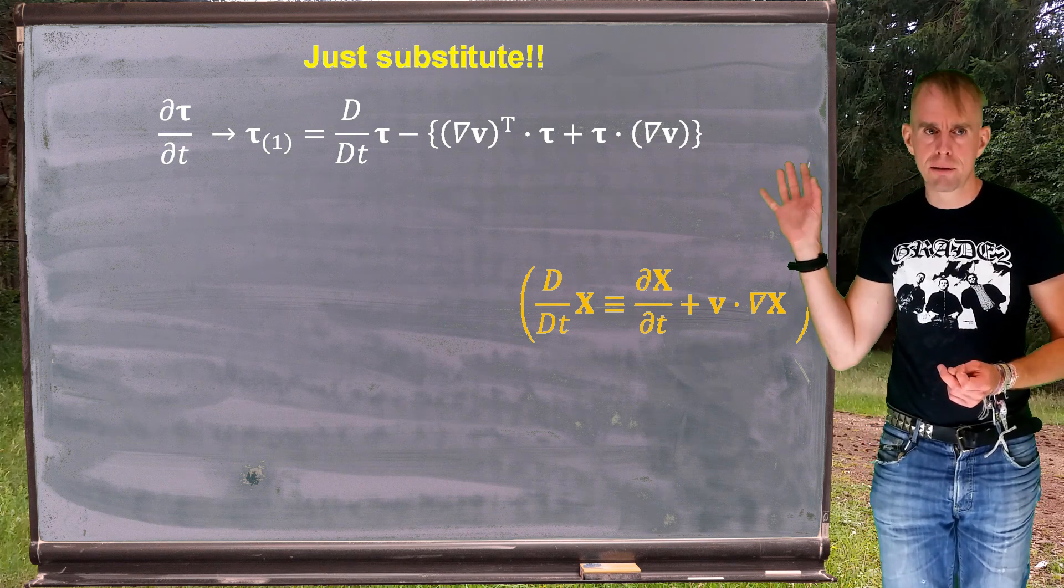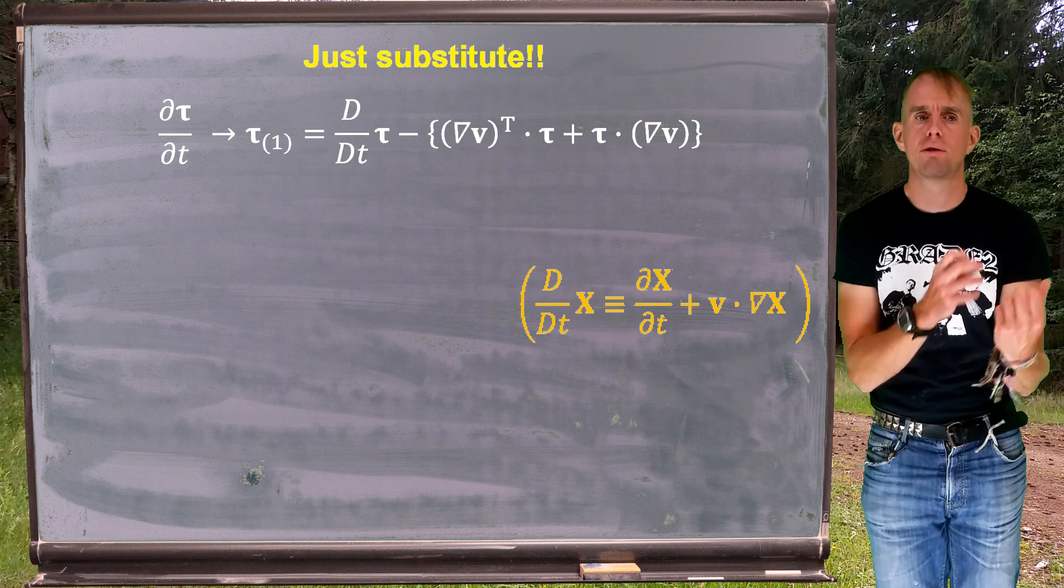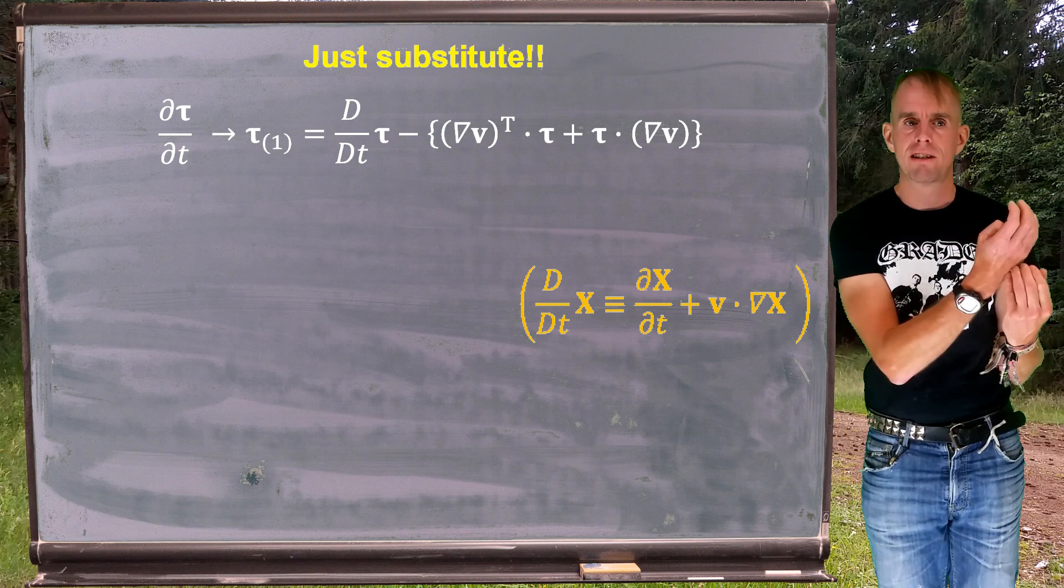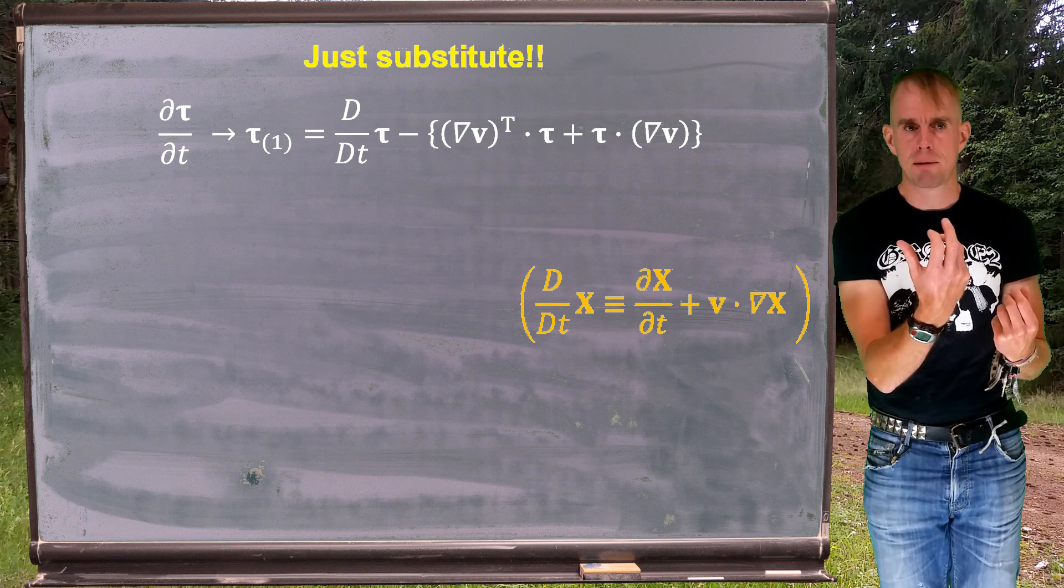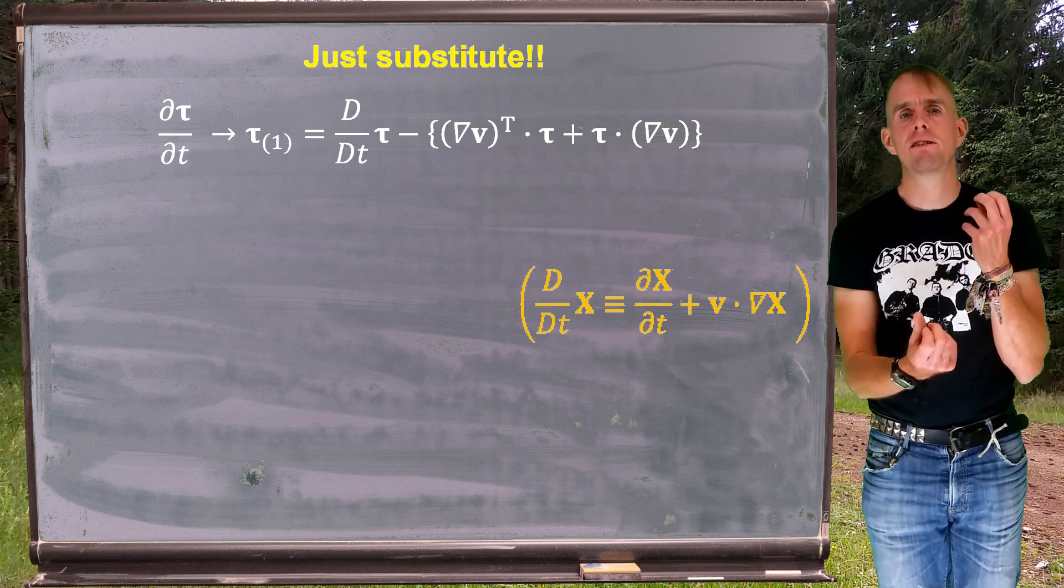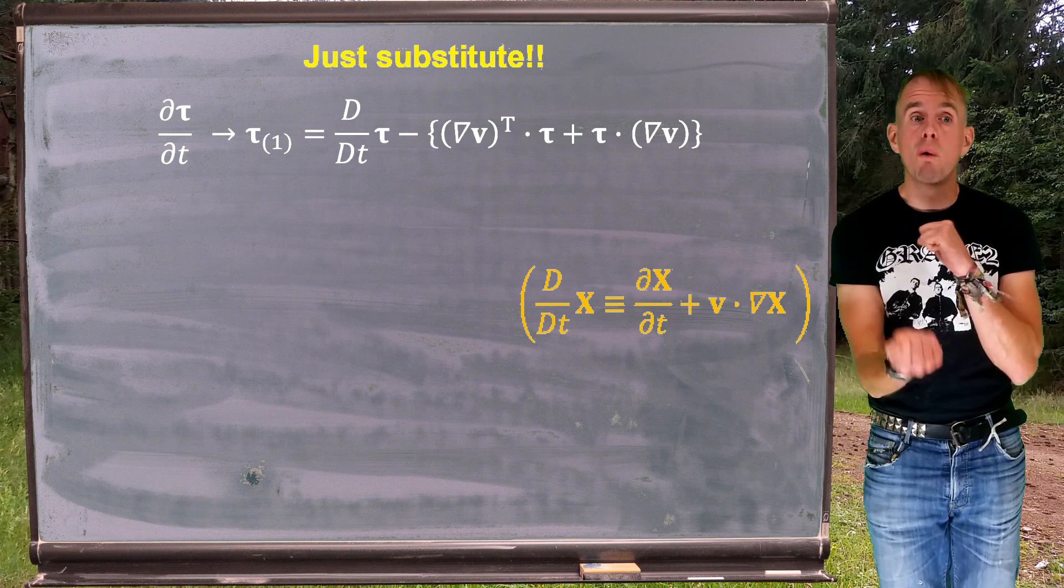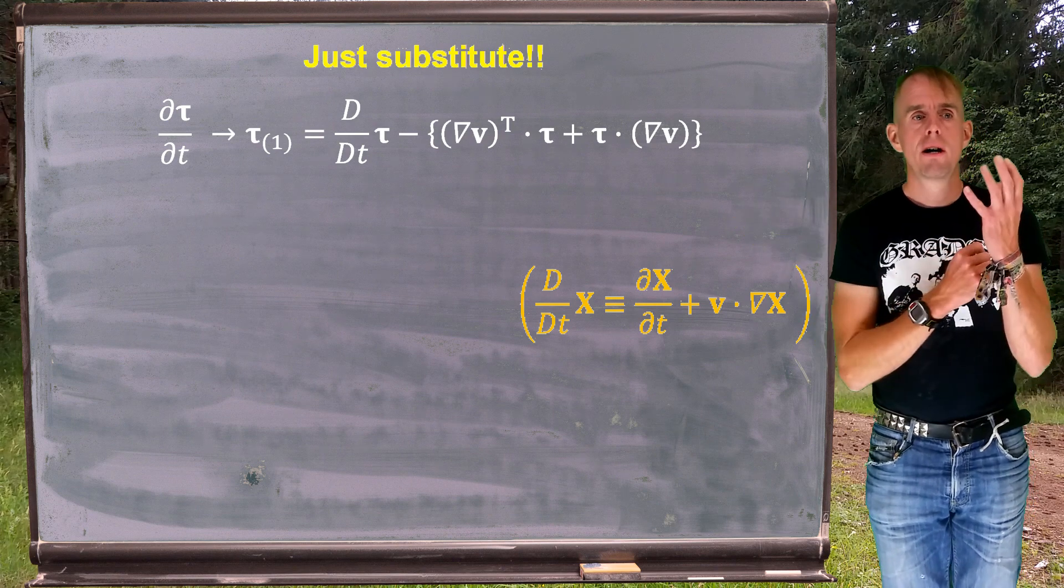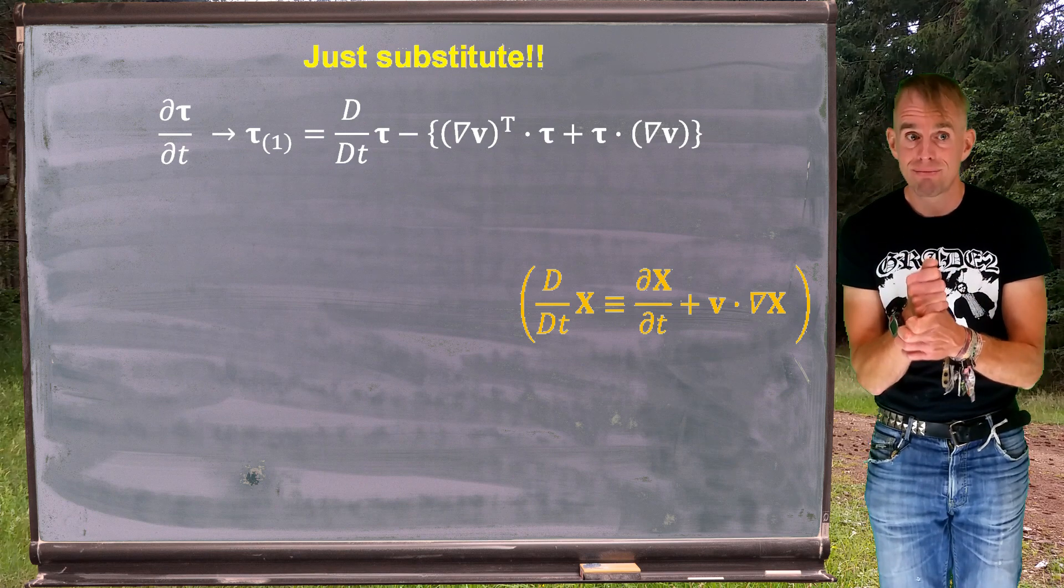If you look at the second and third term in the curly brackets on the board, you'll see they should be treated as one because we've got grad v transpose dot tau, second rank, third rank tensor, sorry, second rank tensor dot product second rank tensor, plus tau dot grad v, second rank tensor dot product second rank tensor. That is a symmetric entity. If you think about how we defined strain rate, gamma dot, it was grad v plus grad v transpose, and it was the sum of grad v and its transpose that gave us symmetry. Here we have exactly the same idea. So the upper convected time derivative of stress, tau subscript brackets one, is symmetric and is second rank tensor.